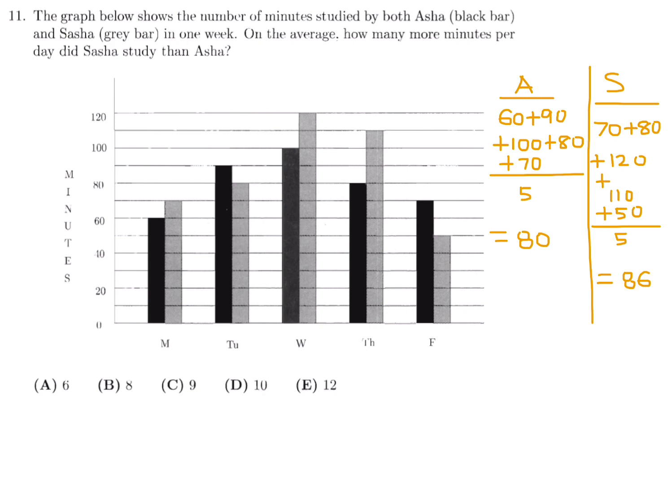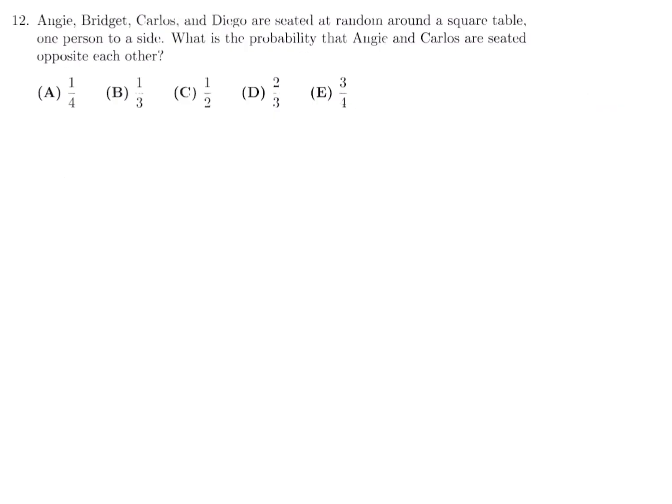Number 12: Angie, Bridgett, Carlos, and Diego are seated at random around a square table, one person to a side. What is the probability that Angie and Carlos are seated opposite each other?